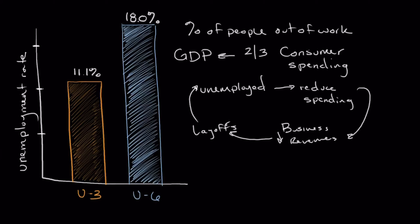There are two ways we measure unemployment: U3 and U6. U3 is what we call the unemployment rate — that's the one widely reported when you open a newspaper, read an article, or listen to a podcast. U6 is what we call the underemployment rate, and that isn't cited very often.